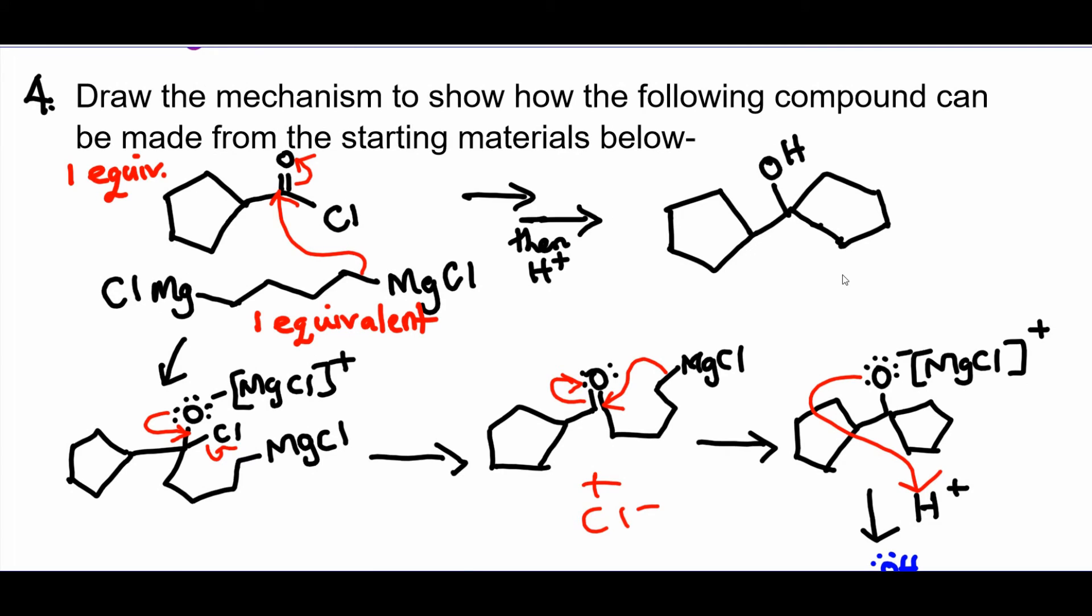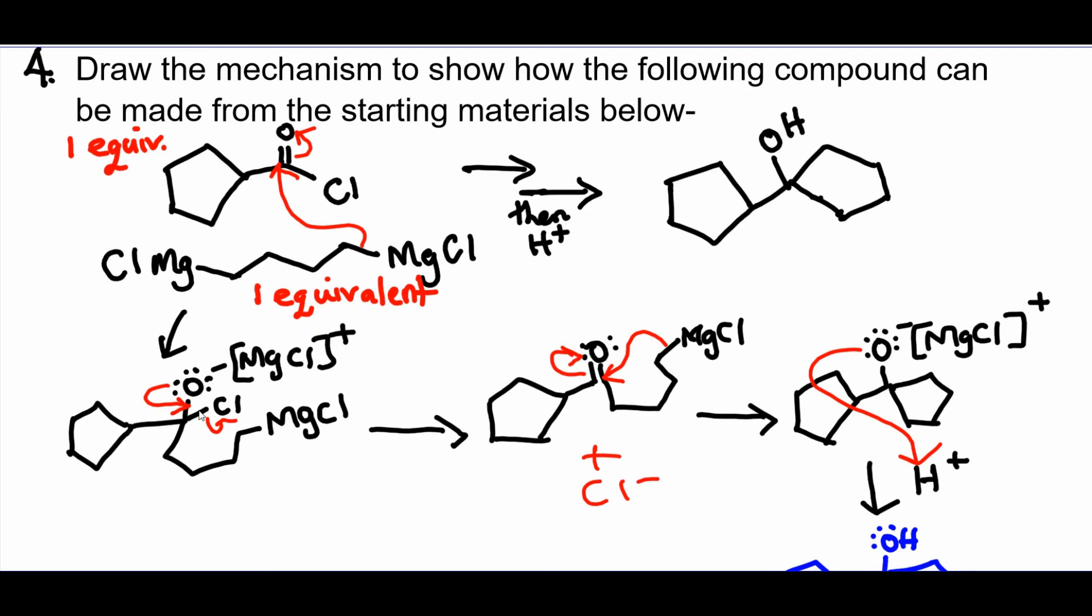Draw the mechanism to show how the forming compound can be made from the starting materials. You have one equivalent of this and one equivalent of the Grignard. So we're going to do stepwise. You see you're ending up forming two rings. So we'll use this structure with the four carbons to form the second ring, the second five-membered ring. So the first Grignard will attack the carbonyl. It opens up. You get this alkoxide intermediate product. The oxygen has too many lone pairs of electrons. So you're going to use one of them to reform the carbonyl, to push the chloride out. You get it as a leaving group and you get a ketone.